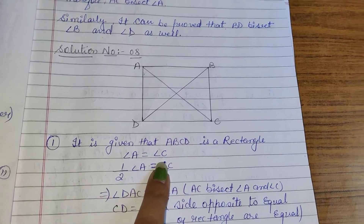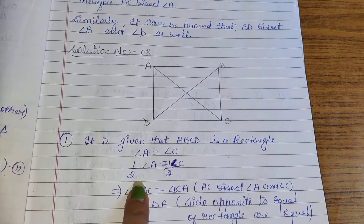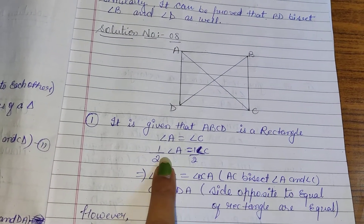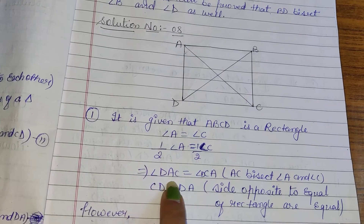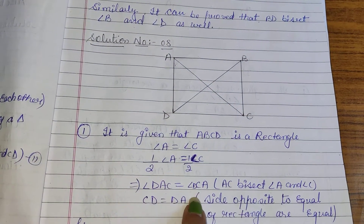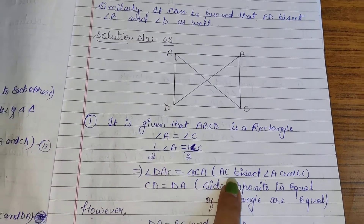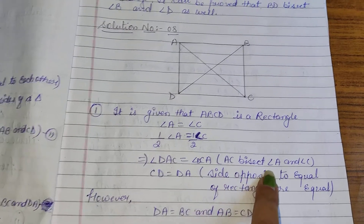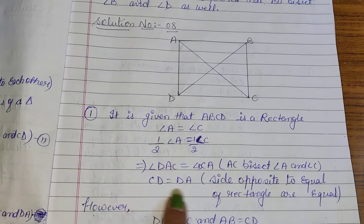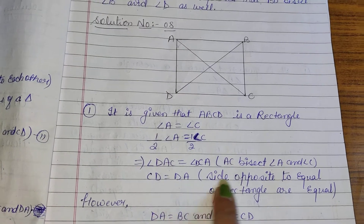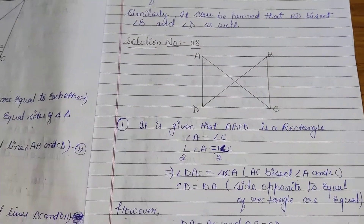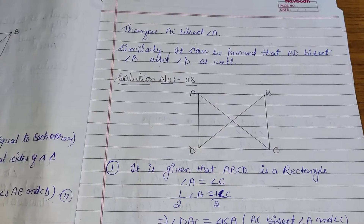Since ABCD is a rectangle, angle A is equal to angle C — opposite angles. We can write half of angle A is equal to half of angle C. Half of angle A is angle DAC and half of angle C is angle DCA. AC bisects angle A and angle C. Therefore CD is equal to DA — side opposite to equal angles. Opposite sides of a rectangle are equal.